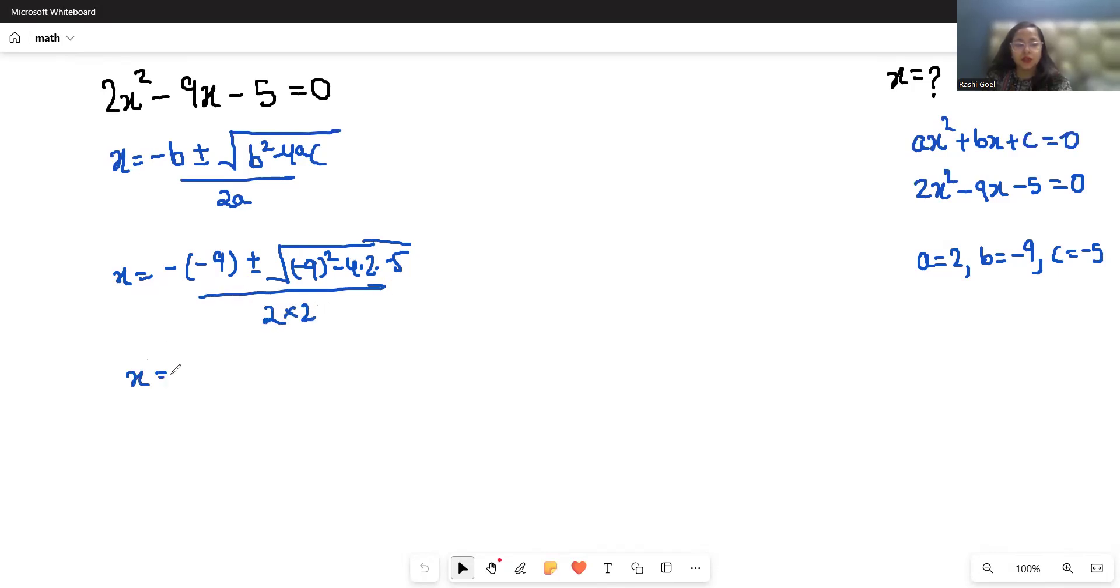x = (9 ± √(9² + 40)) / 4. So x = (9 ± √121) / 4. This simplifies to x = (9 ± 11) / 4.